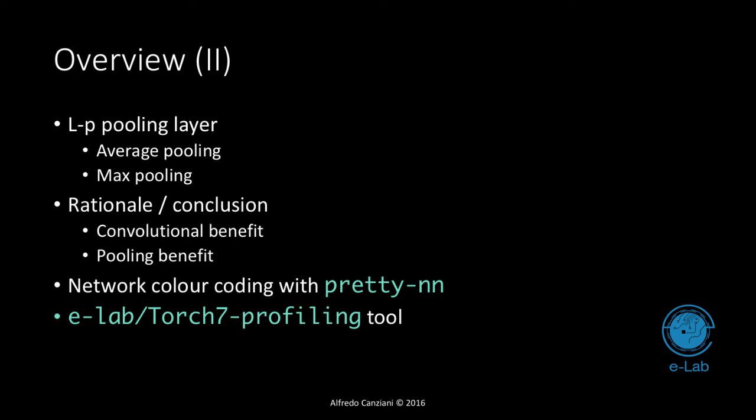Finally, we will introduce the ELab Torch7 profiling tool — a tool written around October 2014 that now has more than 200 commits from ELab members and others. We will use it to profile a convolutional neural network in Torch and compare the results we computed manually.